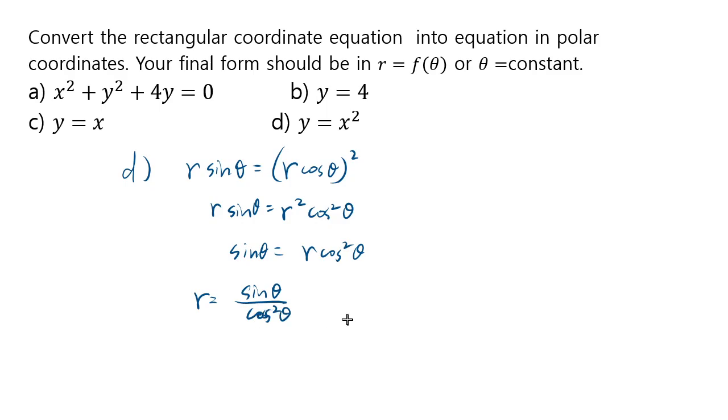R equals to sine theta over cosine squared theta, which is perfectly fine. But you can further simplify this as r equals to sine over cosine is tangent, and one over cosine is secant, so you can rewrite it like this way. But that's not necessary.